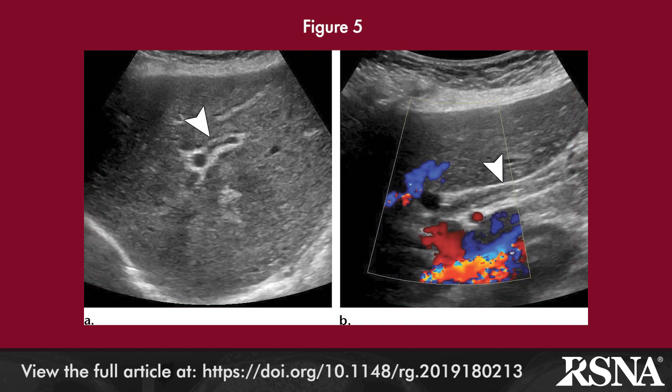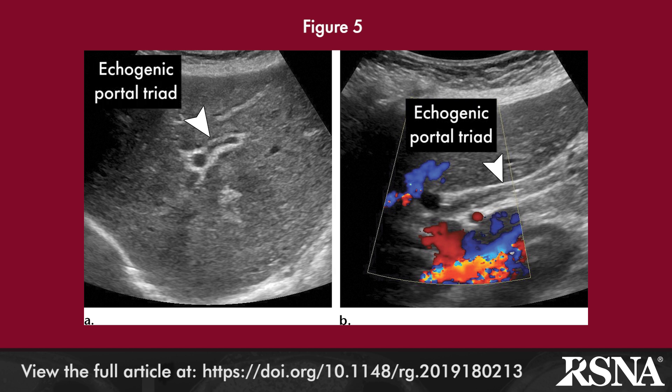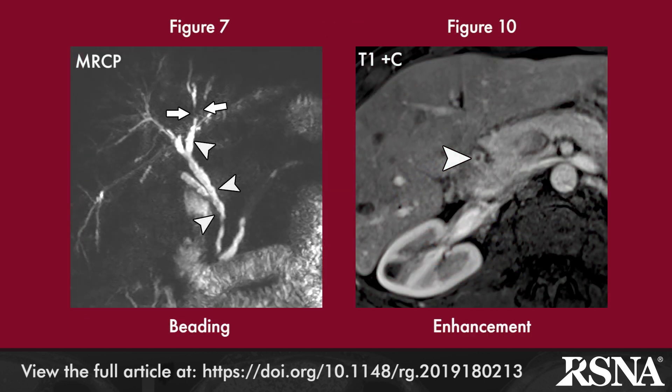Sonographic findings of PSC include echogenic mural thickening of the bile ducts, including the common hepatic and bile duct. MR and MRCP features of PSC include intrahepatic bile duct dilatation, stenosis, beading, extrahepatic bile duct stenosis, and wall enhancement and thickening.